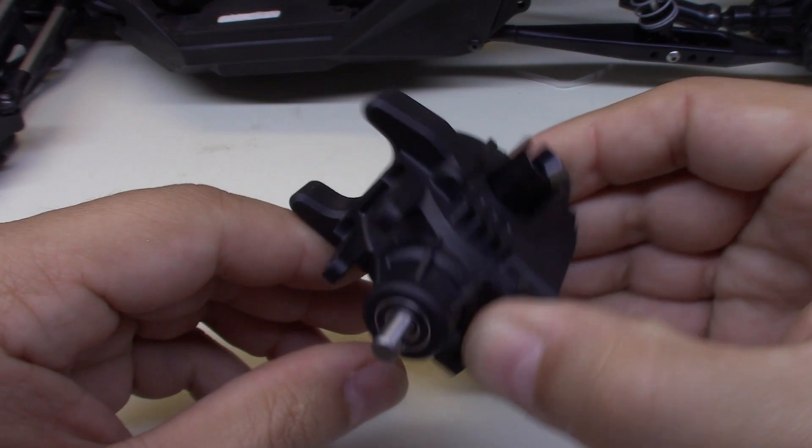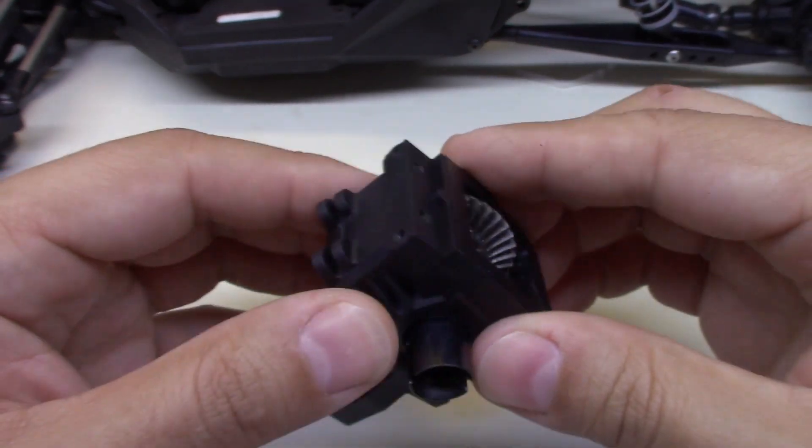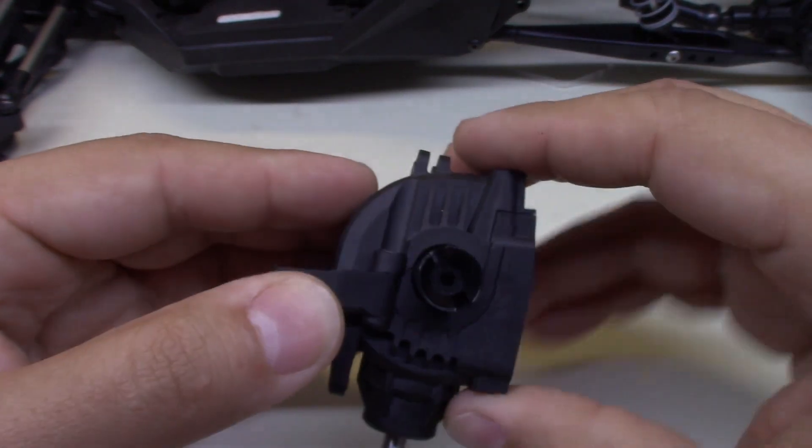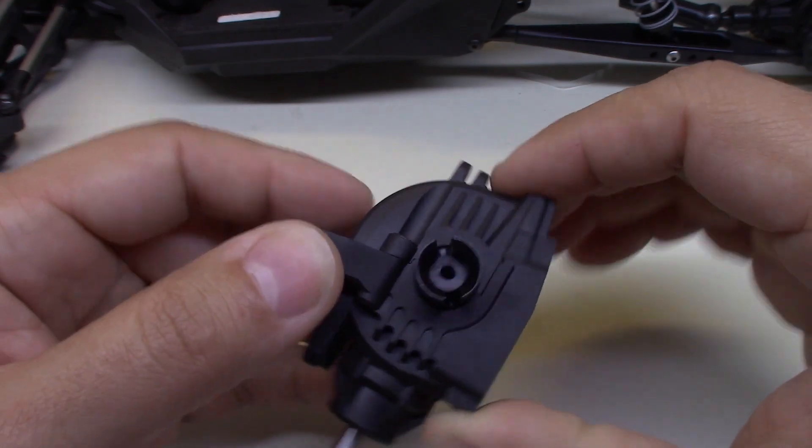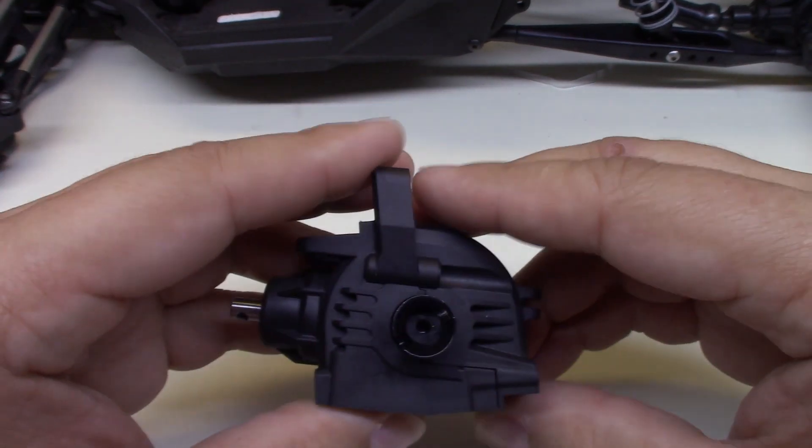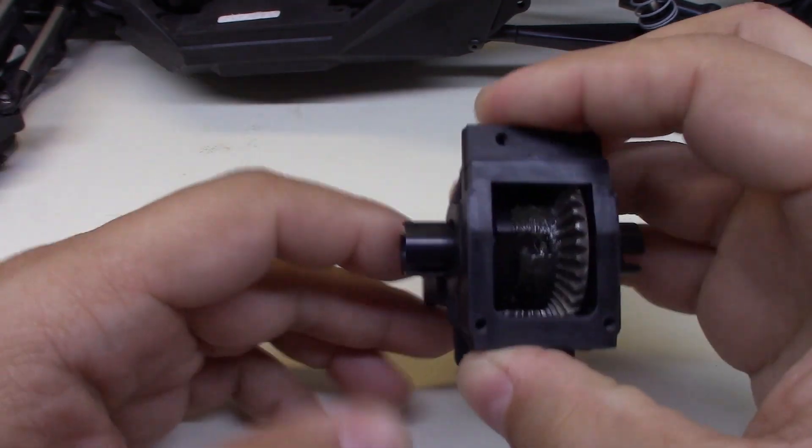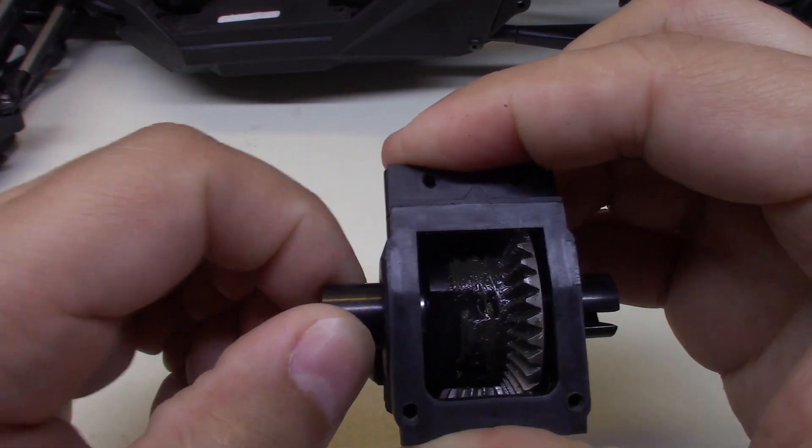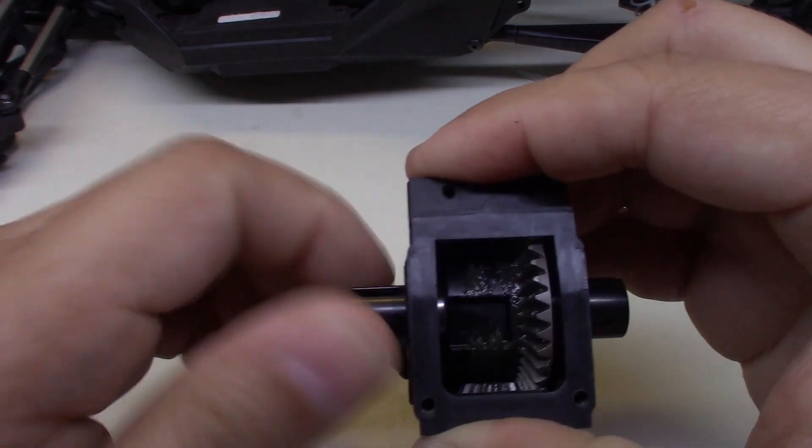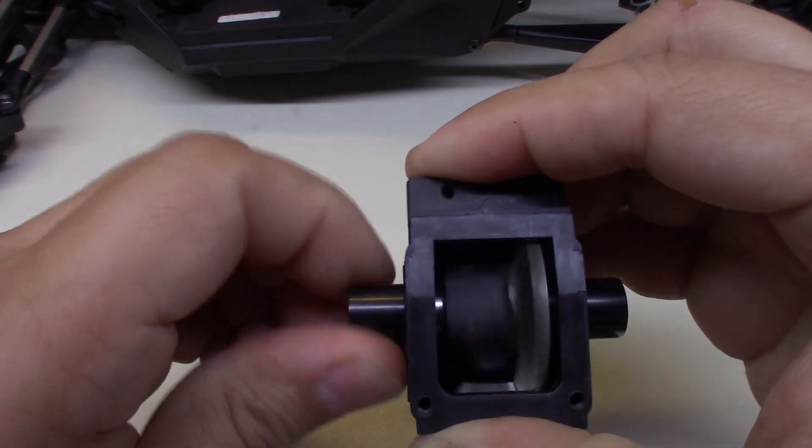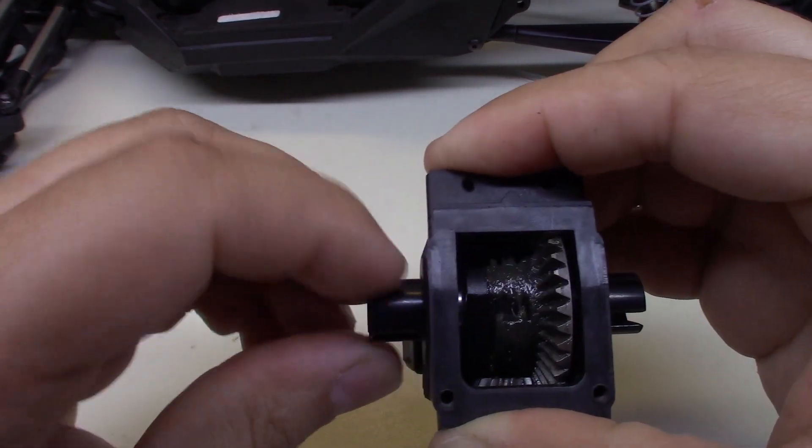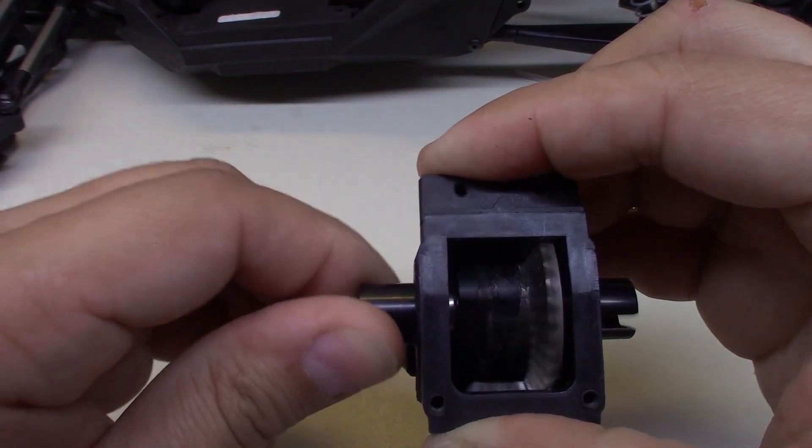If I hold this together, one thing you want to do when you're checking this is make sure you hold the differential together where it would be mounted, because this differential is only mounted with two screws, so you can pull this apart. You hold it together tightly, and if you can listen to this, hear that? That's a sound that they're way too tight. If you can hear and feel that notchiness, that means it's way too tight.